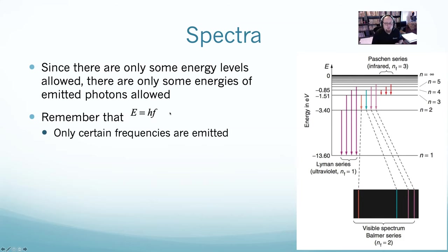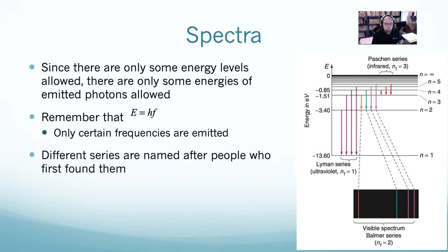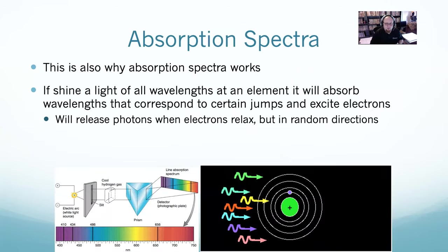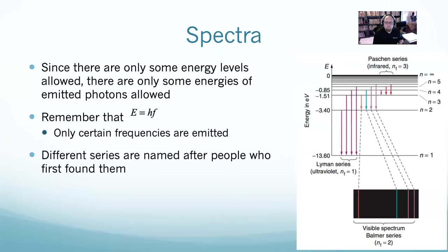Keep in mind that the energy of a photon is HF, so only certain frequencies are possible. When something goes from one energy level to another, it will emit one photon — one electron, one photon. If you excite an electron, it will jump to a higher energy level. Any time an electron relaxes, it will emit one photon.